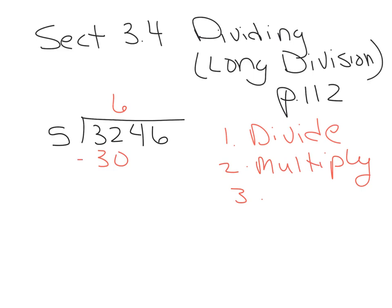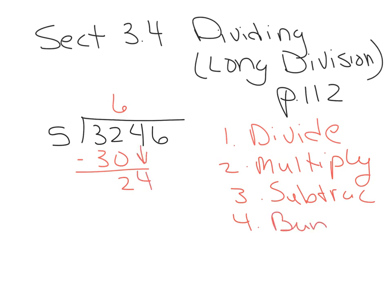The third step is subtract. We subtract our multiplication from our starting numbers. So the third step is subtract. And 32 minus 30 is 2. The fourth step is we bring down the next digit. These basic four steps are the same steps we're going to use with polynomials, and then after we do that, we start all over again.